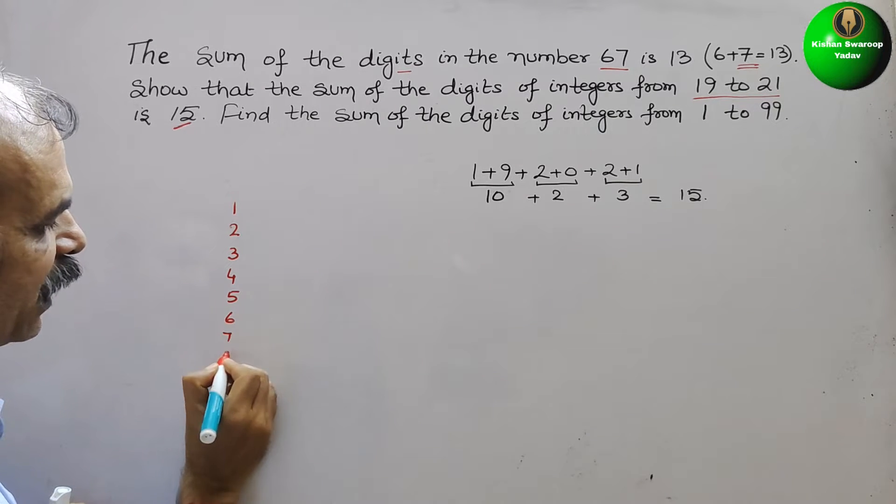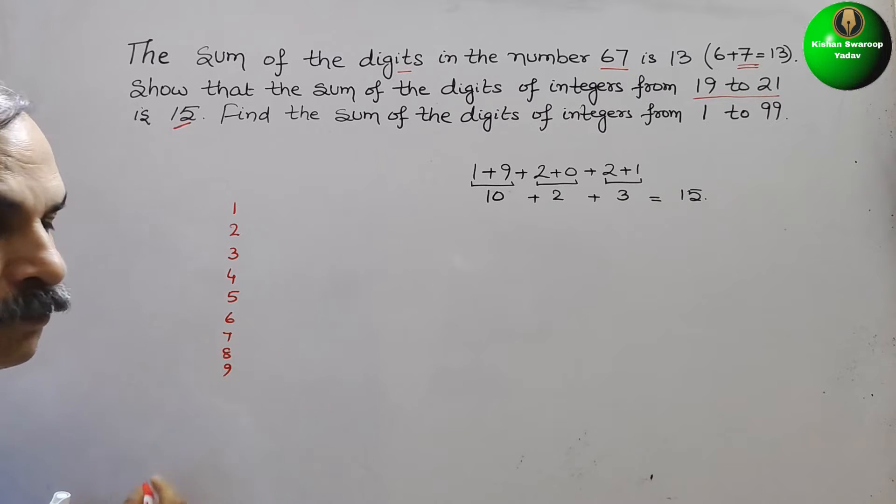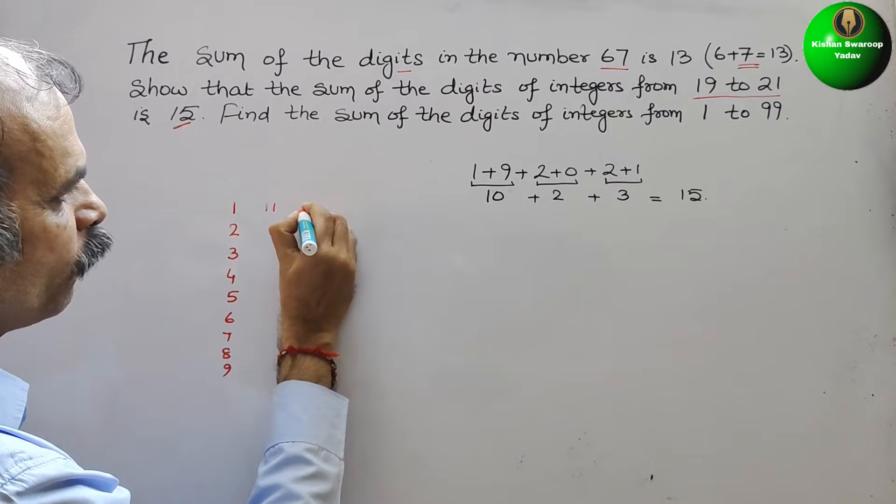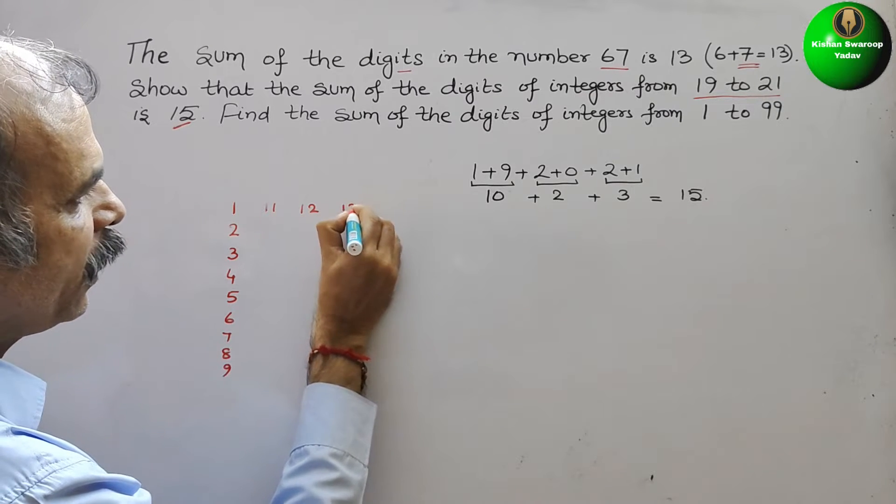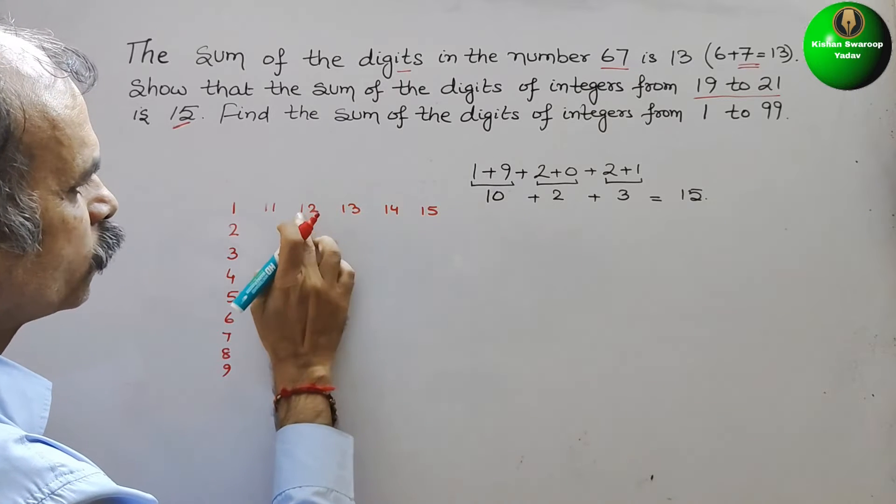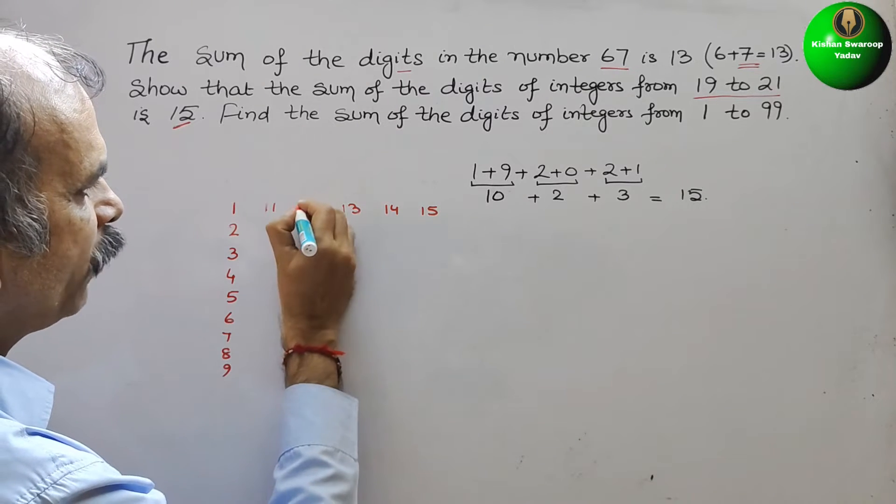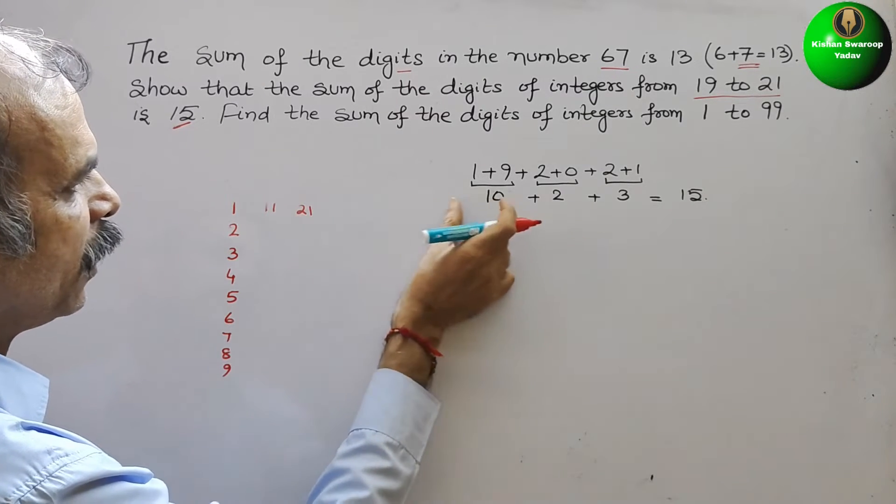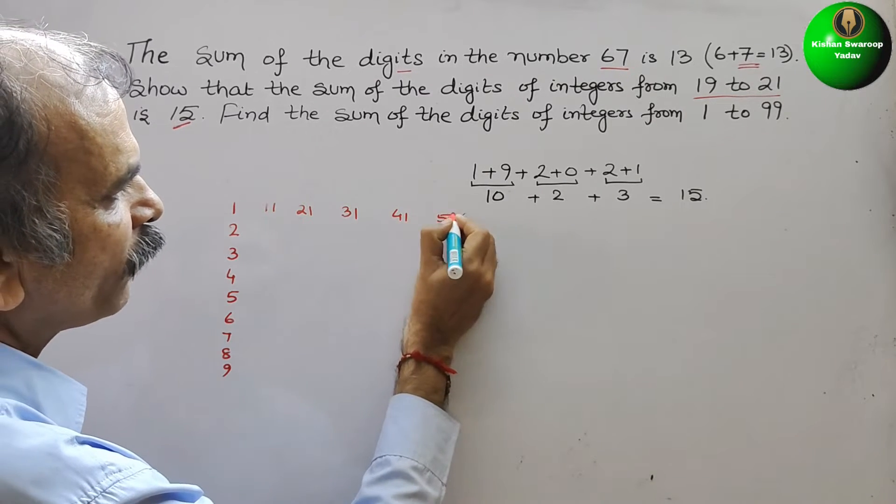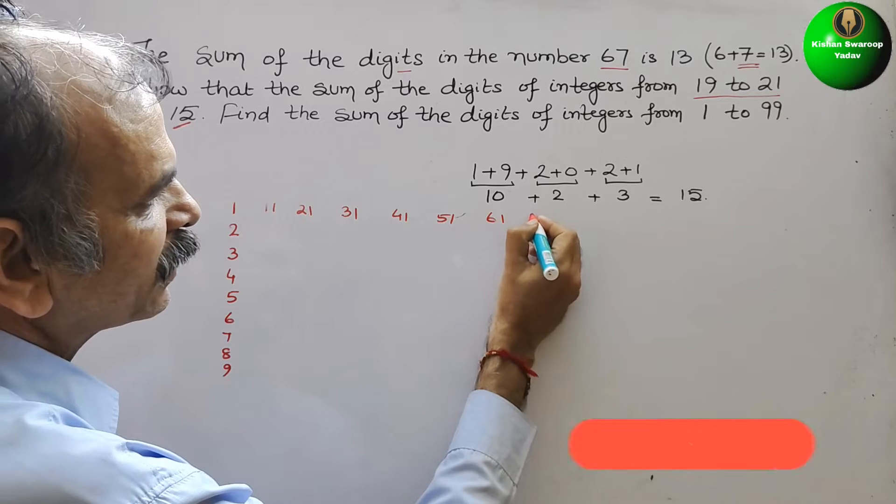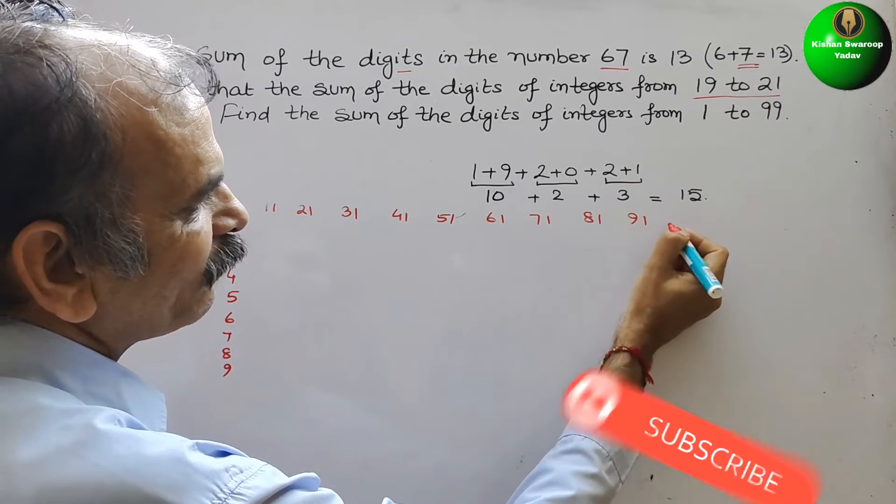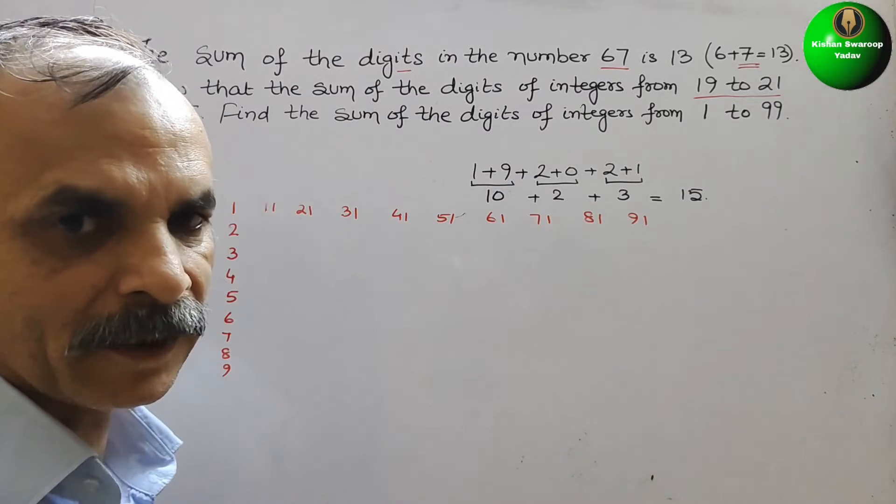6, 7, 8, 9. And here it will be 11, 12, 13, 14, 15. No, sorry. It will be 21, and 31, 41, 51, 61, 71, 81, 91, like that.